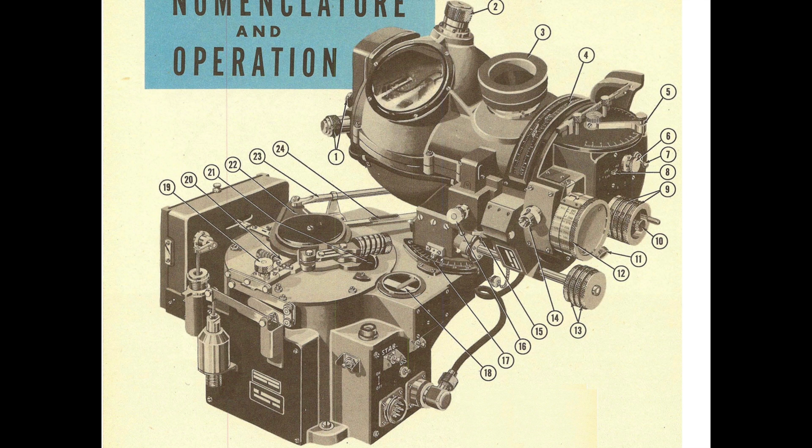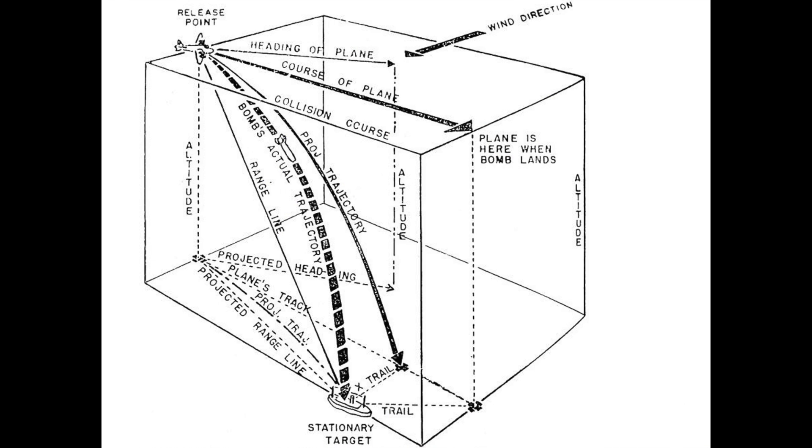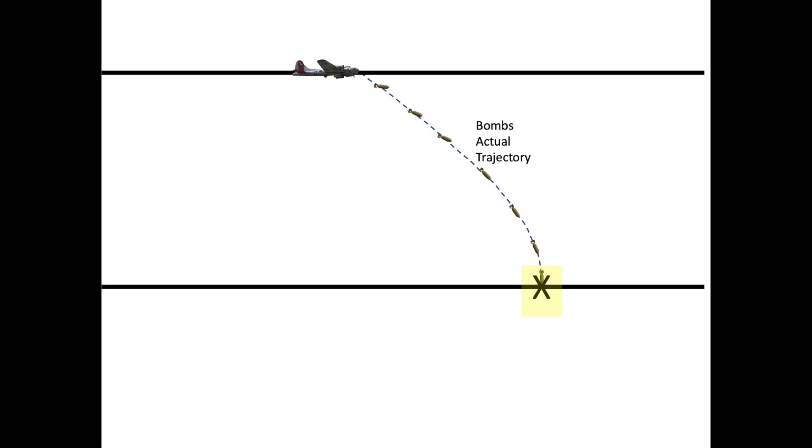In order to strike a target, the bombardier will need multiple parameters to compute and feed into the Norton bomb site. The point of release can be solved as a math geometry problem. Let's assume our target is at position X and we are at a bombing altitude of 19,000 feet at a typical formation ground speed of 200 miles per hour. We need to determine position O relative to the target in three-dimensional airspace to release the bomb.